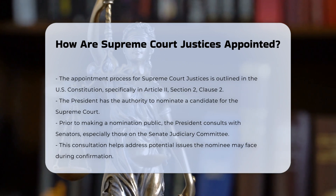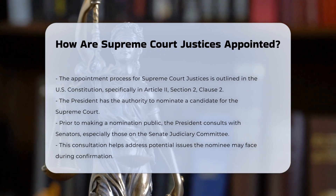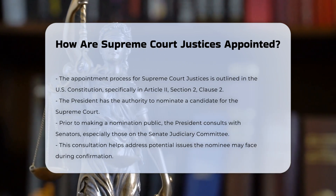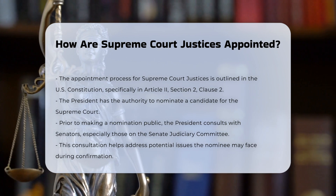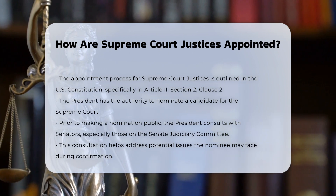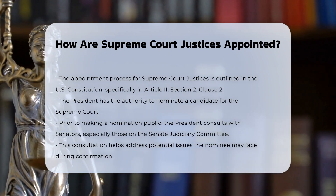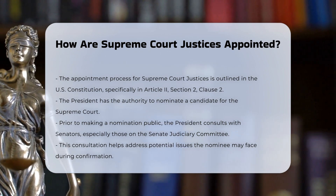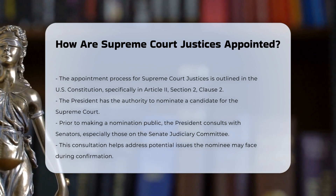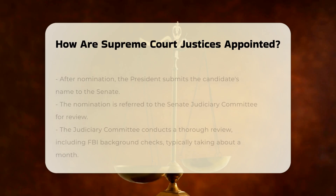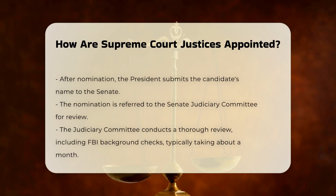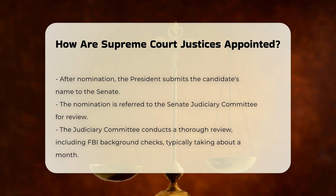The process begins when the President identifies a candidate for the Supreme Court. Before making the nomination public, the President often consults with Senators, particularly those on the Senate Judiciary Committee, as a matter of senatorial courtesy.